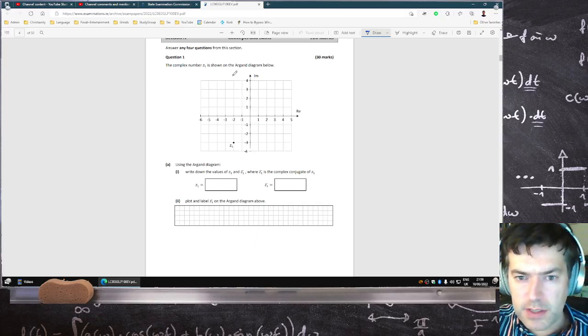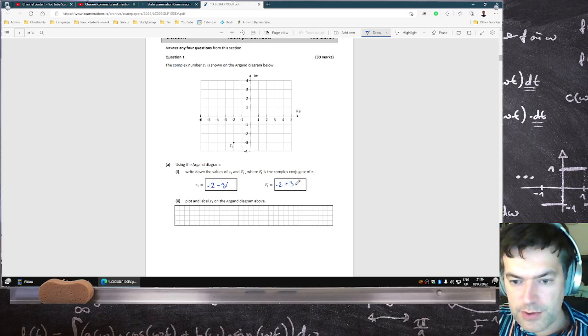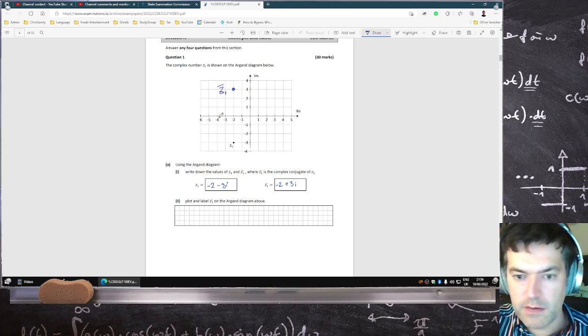Complex number Z1 is shown on the Argon diagram. Write down the value of Z1. That's minus 2, minus 3i, and its conjugate is minus 2, plus 3i, and plot Z1 and its conjugate on the diagram. 1, 1, 2, 3. There we go. Z1 conjugate right there.